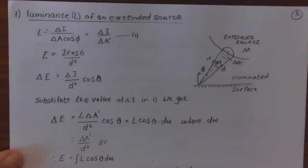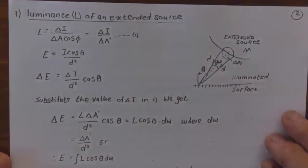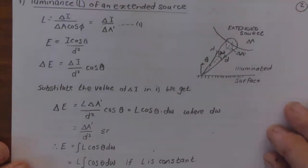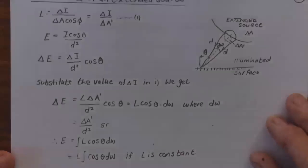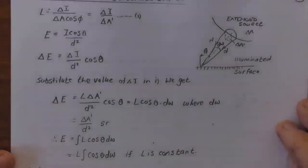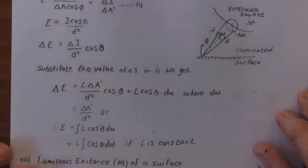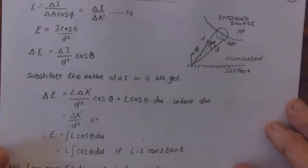The luminance L of an extended source is given by L = ΔE/(ΔI·A·cos(φ)), which equals ΔI/ΔI·A'. Therefore E = I·cos(θ)/d², and the change ΔE = ΔI/d² × cos(θ).